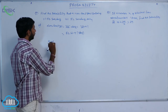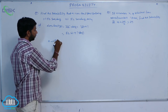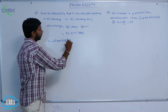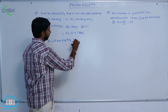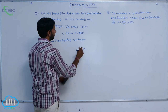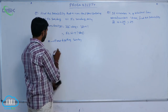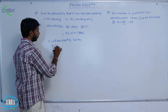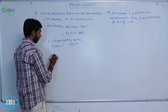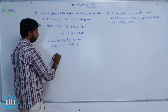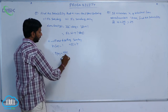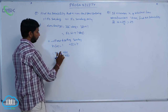Let A be the event of getting a Sunday out of a week. Then n(A) = 1 and n(S) = 7. Therefore, P(A) = n(A) / n(S) = 1/7.